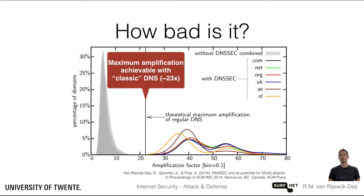This line in the graph shows the maximum amplification that can be achieved with classic DNS. This is around a factor of 23. We take this amplification factor as the maximum acceptable upper limit in DNS amplification, since this amplification can be achieved with the DNS protocol as it has been in operation since 1983.